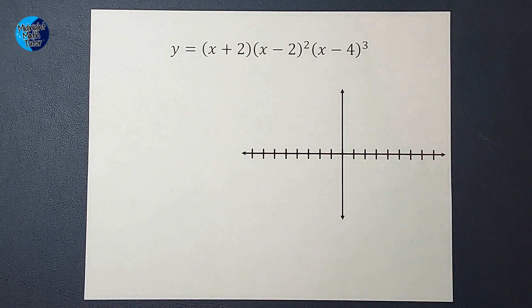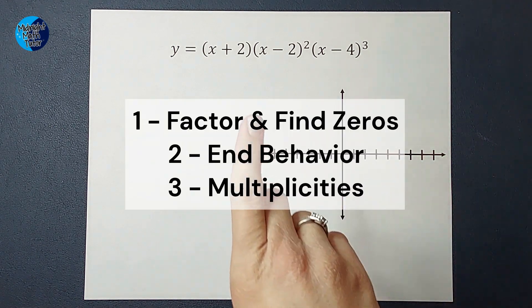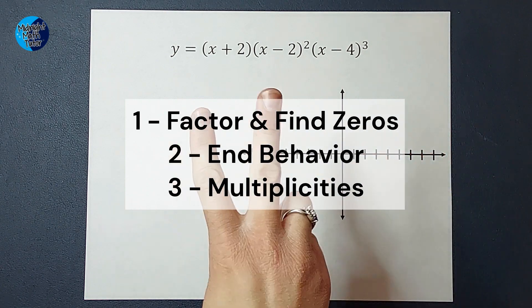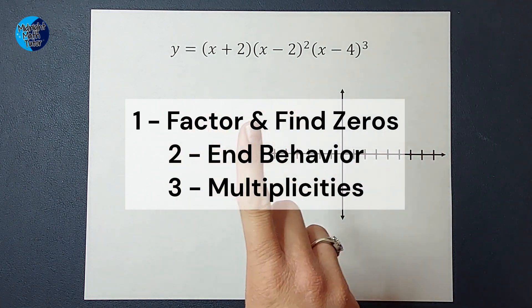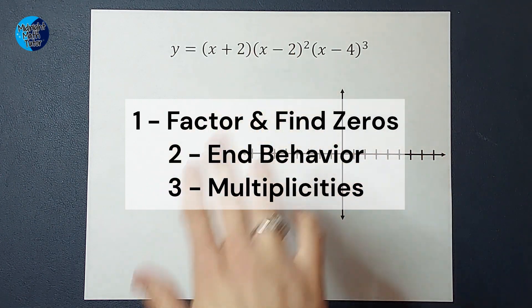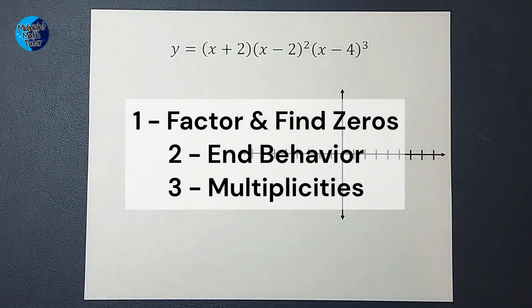So there's a better way. For this, we're going to follow a few steps. First, we're going to factor if needed and find our zeros. Second, we're going to look at end behavior. Third, we're going to look at our multiplicity. And then there's an optional fourth step that we'll talk about once we get there.